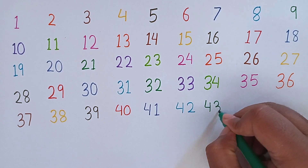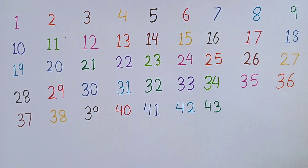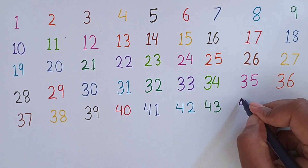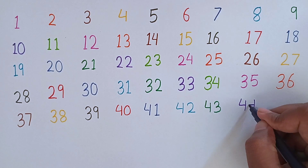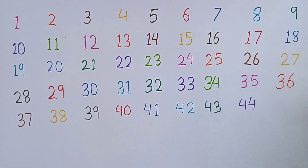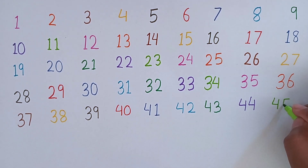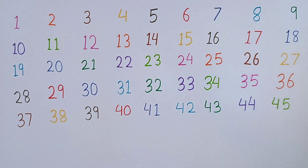Now I am writing 43. This is 43. After 43, which number will be next? 44. 4, 4 — 44. This is 44. After 44, the next number will be 45. 4, 5 — 45.